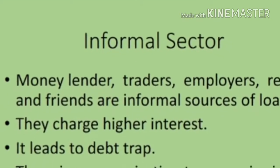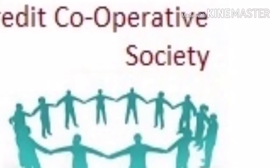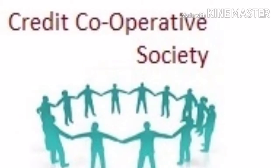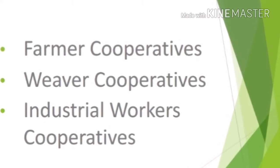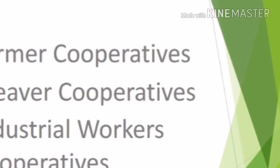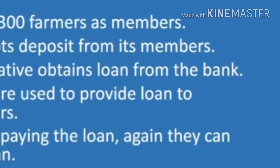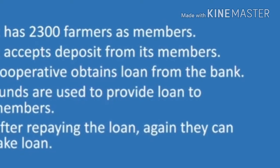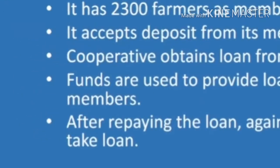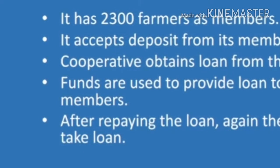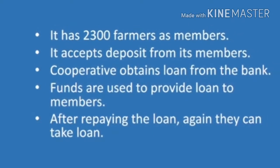Money lenders do whatever is in their interest and sometimes harass the poor borrowers. Besides banks, in the rural area there are cooperative societies. There are several types, such as farmers cooperatives, weaver cooperatives, and industrial workers cooperatives. There is one Krishik Cooperative in Sonpur which has 2,300 farmers as members. They all deposit some money, and with these deposits the cooperative has obtained a large loan from the bank. These funds are used to provide loans to members, and once the loans are repaid, they can take loans from the bank again.